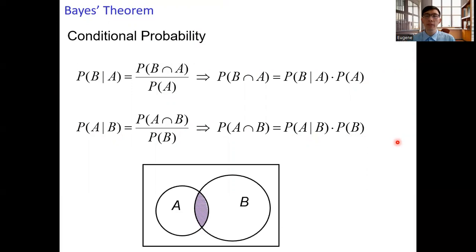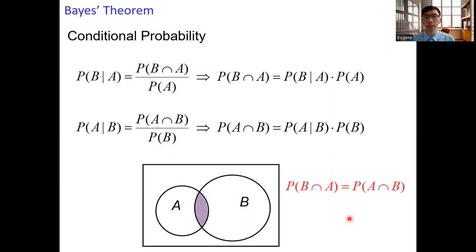But what is the difference between the two intersections — the intersection of B and A and the intersection of A and B? In fact, they are the same. They correspond to the same region, the shaded region in the diagram. Therefore, the probability of the intersection of B and A equals the probability of the intersection of A and B.